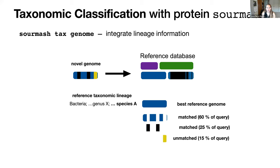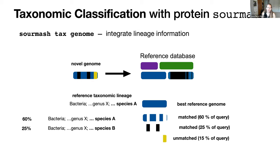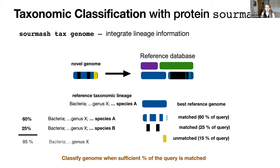With the tax genome command, we take the reference taxonomic lineages assigned to each of those best-matching reference genomes and transfer them onto the match percentages for our novel genome. So we're getting 60% to species A and 25% to species B. Because these are non-overlapping matched regions, we can sum them to get the percent match at the least common ancestor — in this case, genus X has an 85% match. We then choose a percentage threshold for when we consider a sufficient query match and assign that classification to our novel genome.